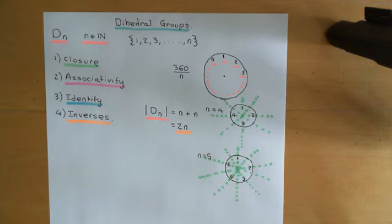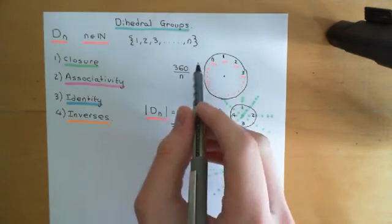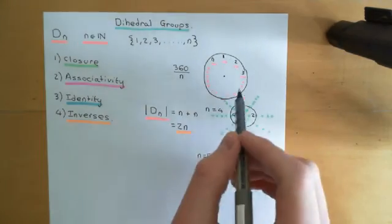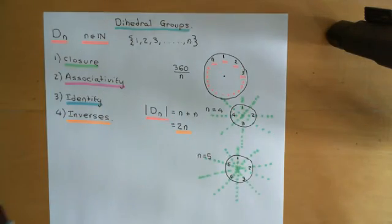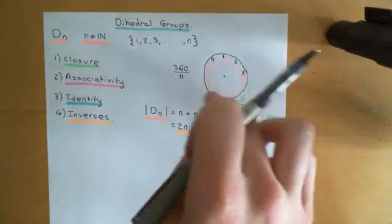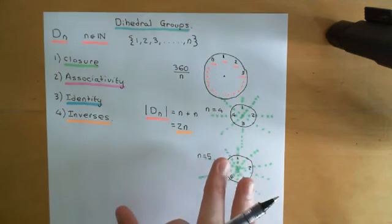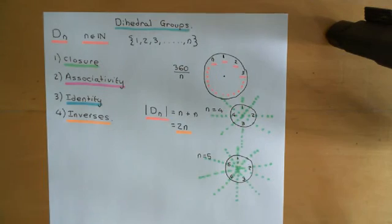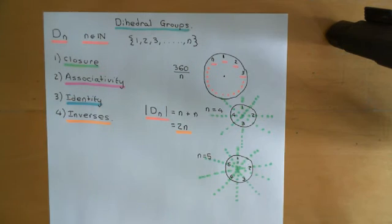In the case of dihedral groups D little n, we think of certain special set permutations. What we're thinking about is putting the symbols 1 to n around the edge of a disk, and then thinking of all real-world manoeuvres you could make to that: all of the rotations within the two-dimensional plane, and all of the flips as well.